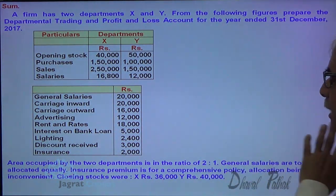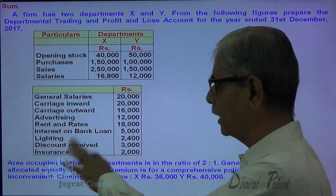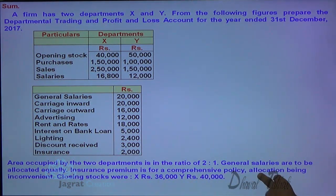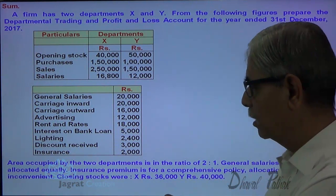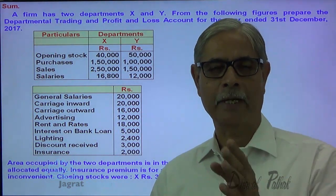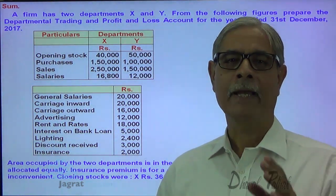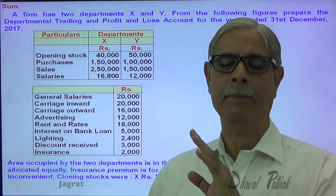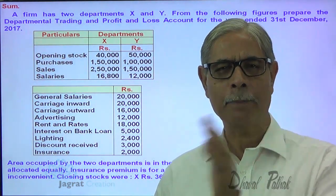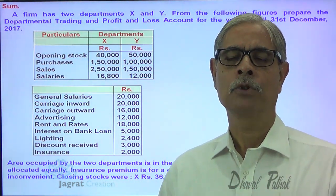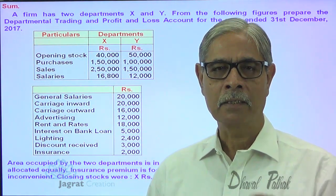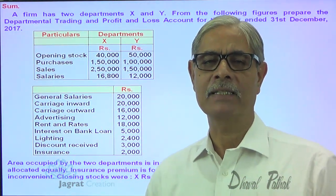Area occupied by the two departments is in the ratio of 2:1. General salary has to be allocated equally as a matter of policy. Insurance premium is for a comprehensive policy, so insurance expense cannot be allocated. Expenses are apportioned to departments on the basis of certain criteria, or if they cannot be apportioned, they are debited to a common profit and loss account prepared for all departments. This is an important point to emphasize.